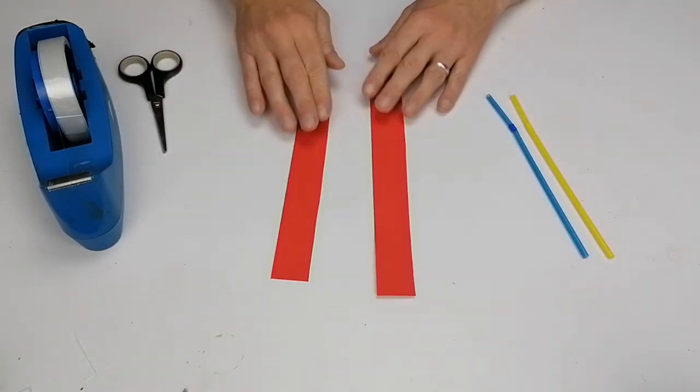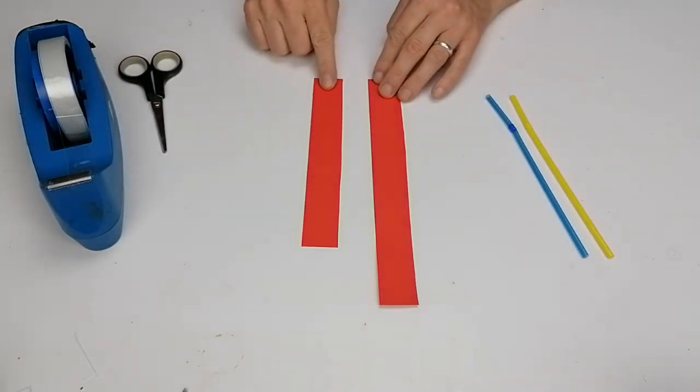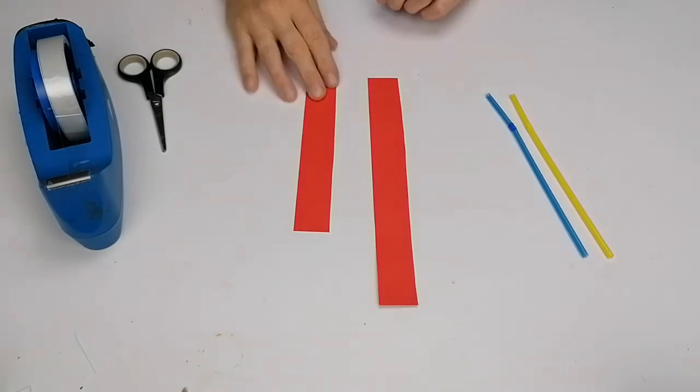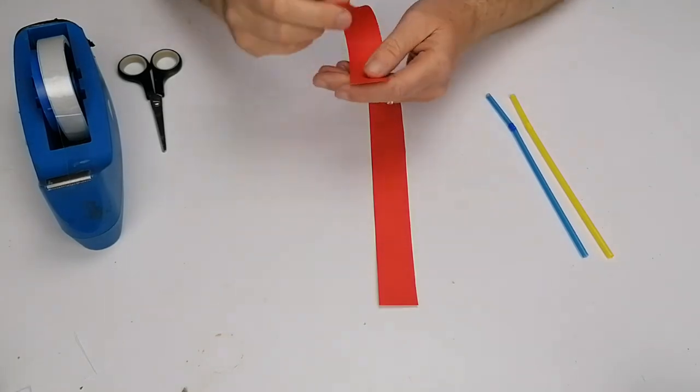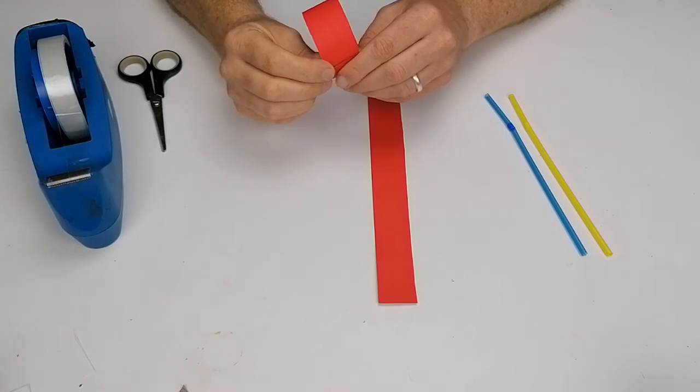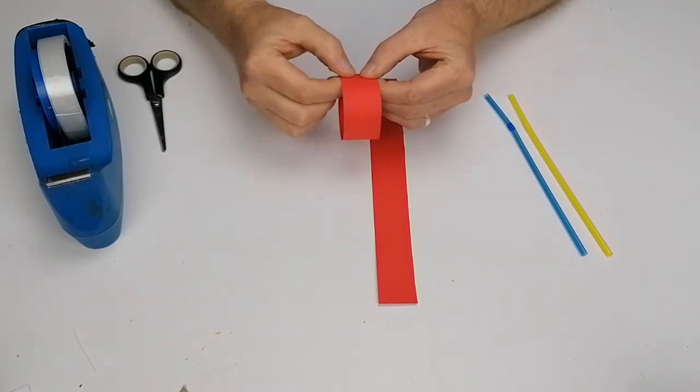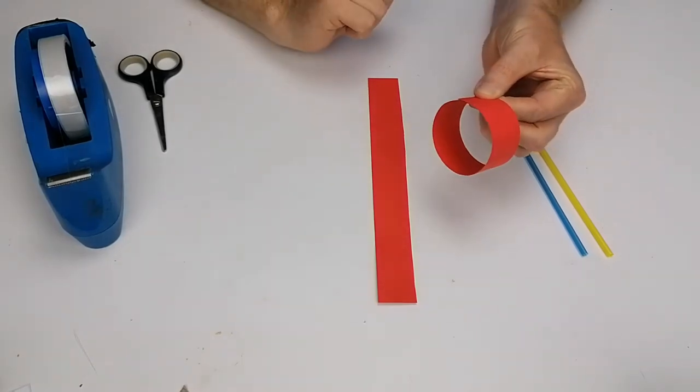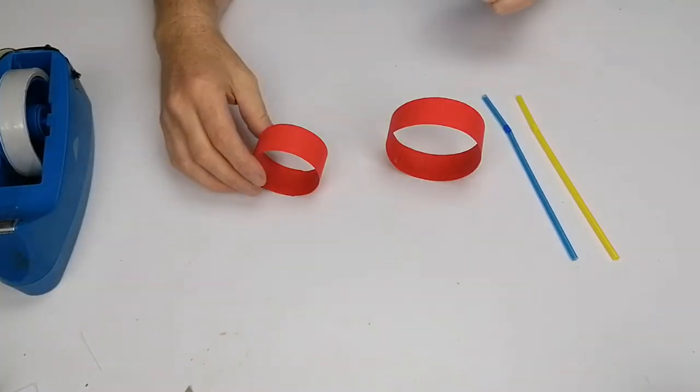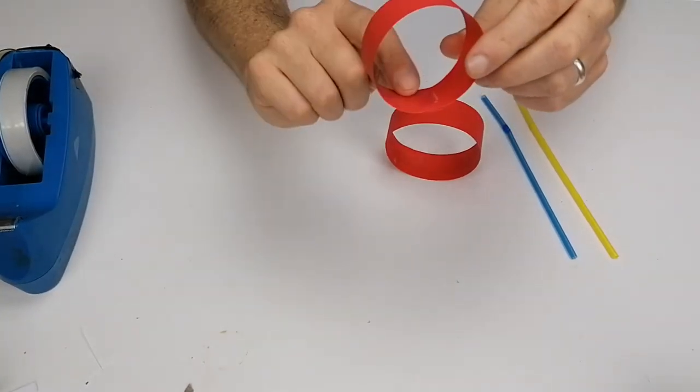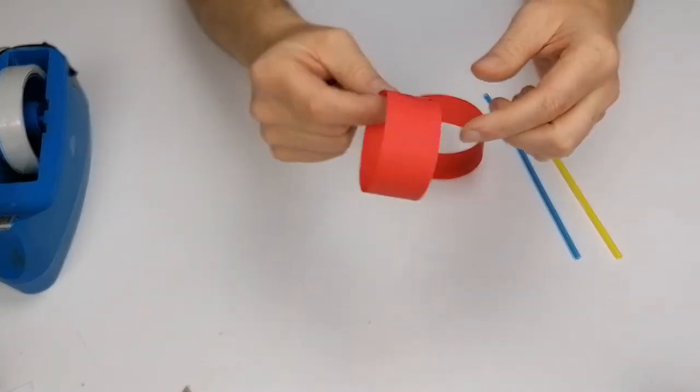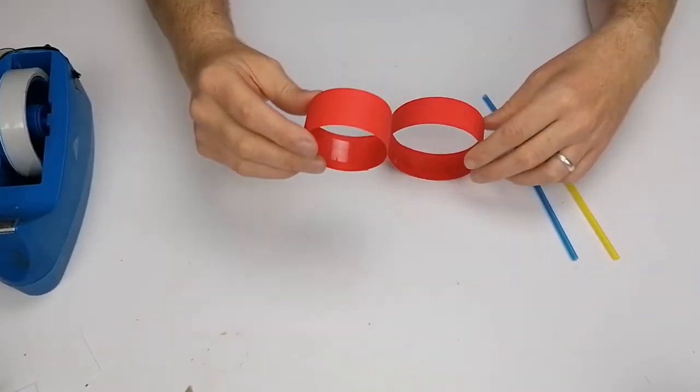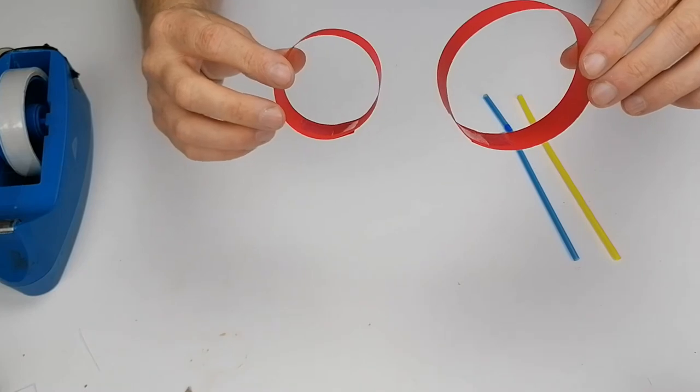Now we have two strips, one just a little bit longer than the other. Take the smaller strip and put it around like this, then put a little bit of sellotape on either side. Do the exact same with the other one. Now we've made the two hoops with a little bit of sellotape on each side. You can see that one hoop is slightly bigger than the other.